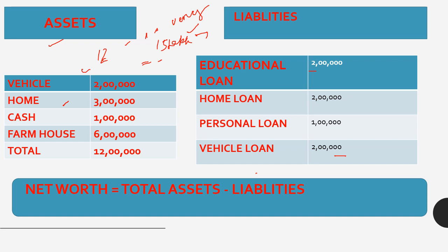Now consider any condition where your farmhouse worth 6,000,000 rupees has been sealed. So your available total assets become 2,000,000 plus 3,000,000 plus 1,000,000 — that is 6,000,000 rupees — because the farmhouse is sealed and you cannot use it. Now the bank will not reduce your loans just because the farmhouse is sealed. Your vehicle loan, personal loan, home loan, and education loan still remain.